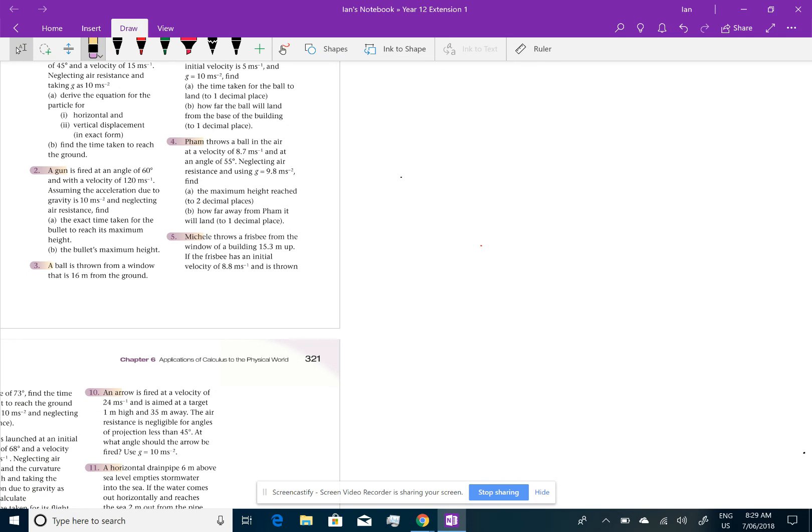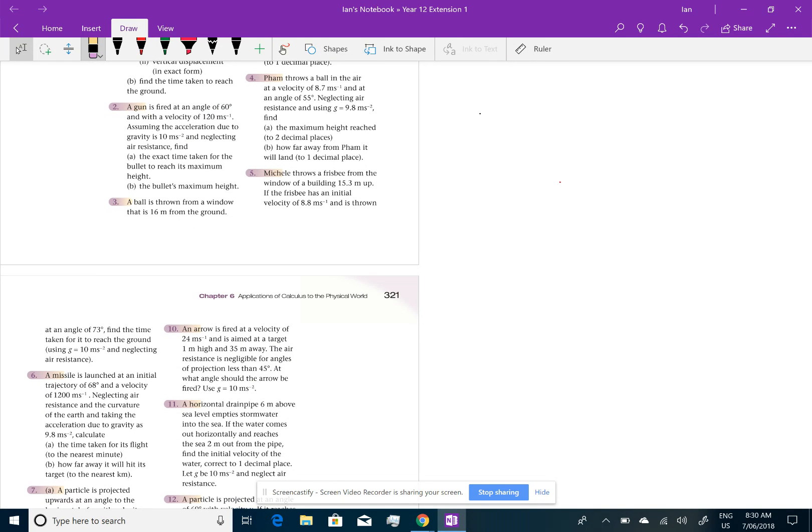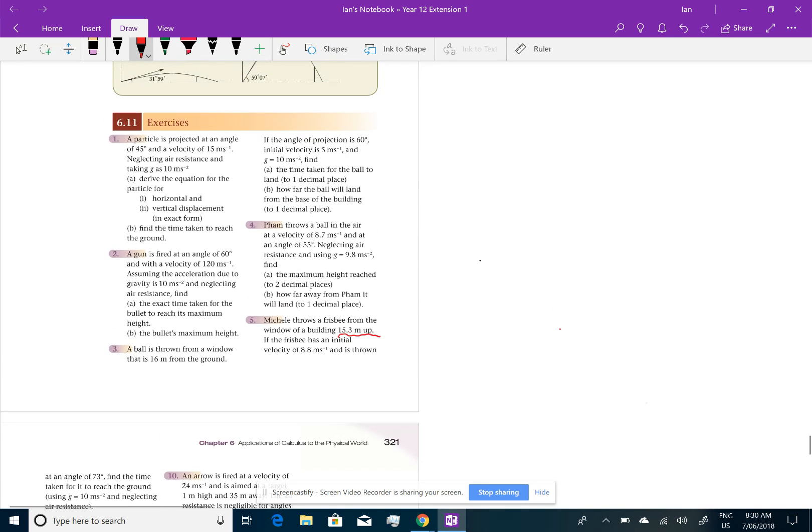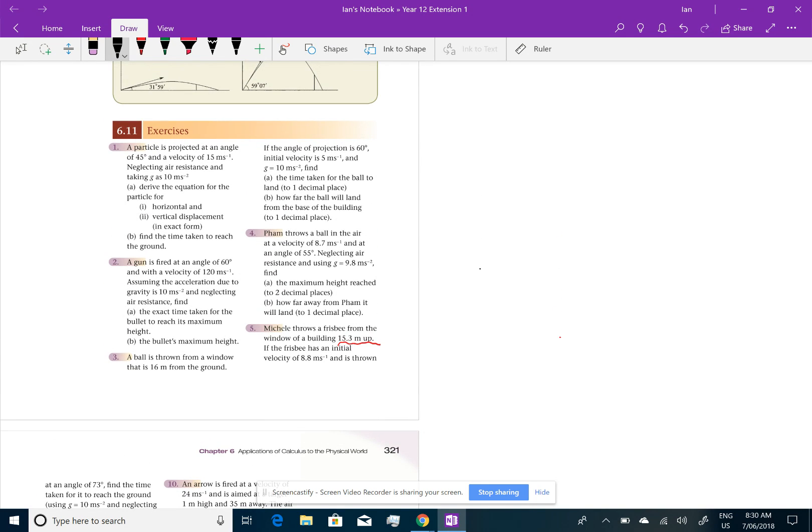So Michelle is throwing a Frisbee, and we're ignoring air resistance, the fact that the Frisbee will fly and travel and curve. We're just going to treat it like a normal projectile. But the difference here is that Michelle is throwing it from a building, and she's 15.3 metres up inside the building.